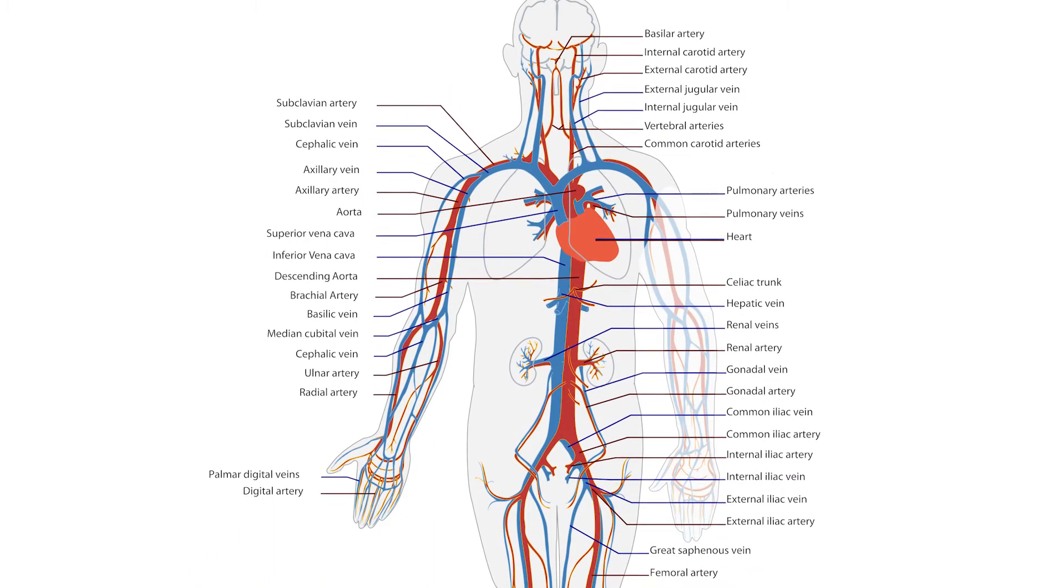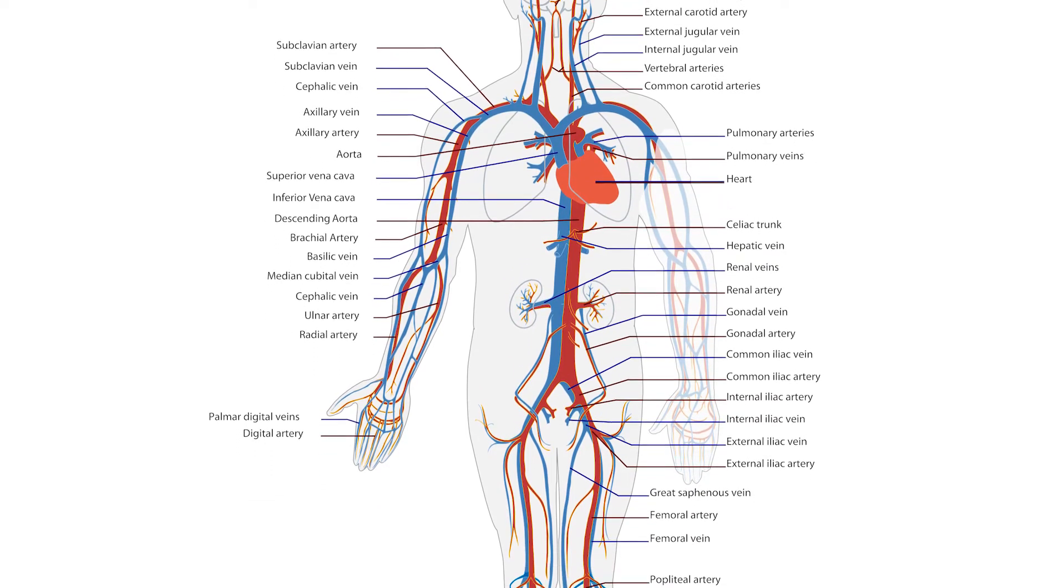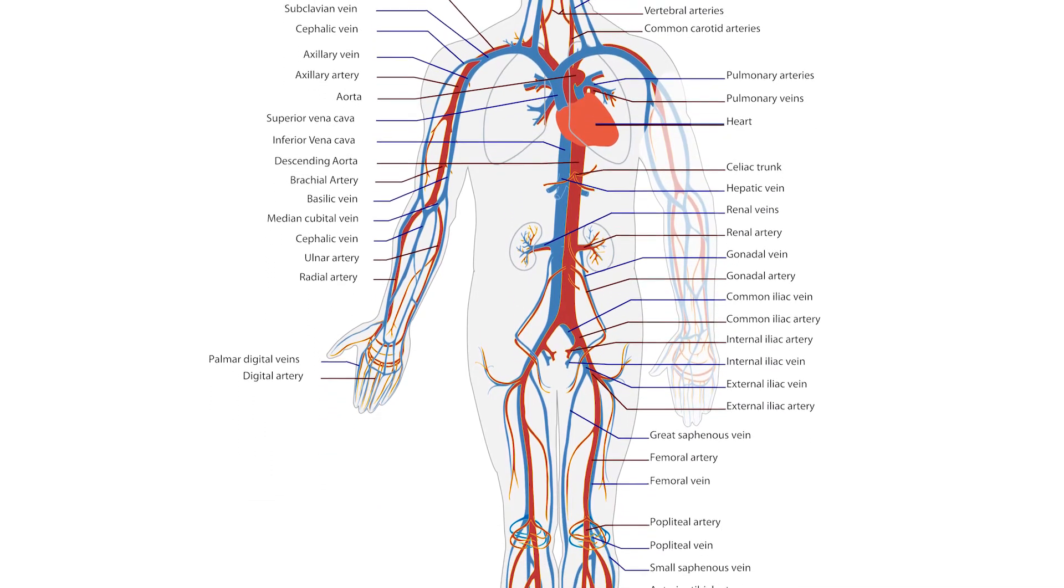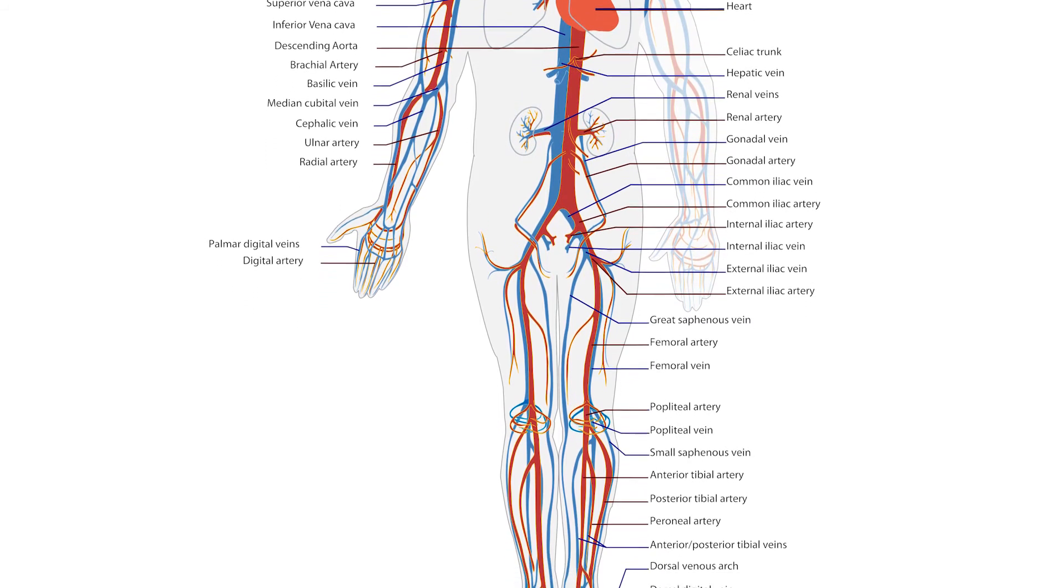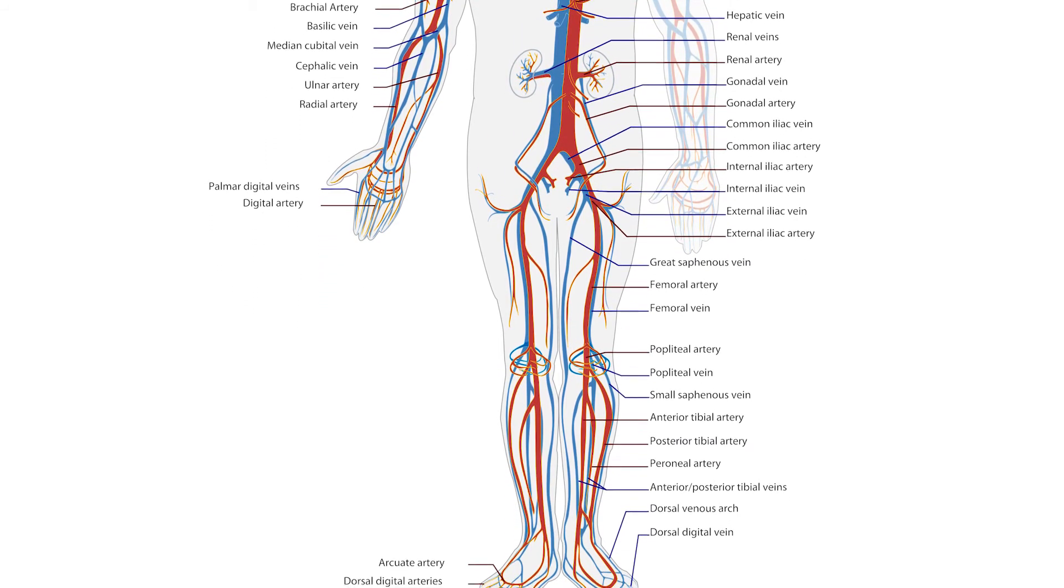Now, since we've covered bones and joints, let's touch on the cardiovascular system. The major structures of the cardiovascular system include blood vessels like arteries and veins, the heart, superior and inferior vena cava, aorta, left and right atriums, left and right ventricles.